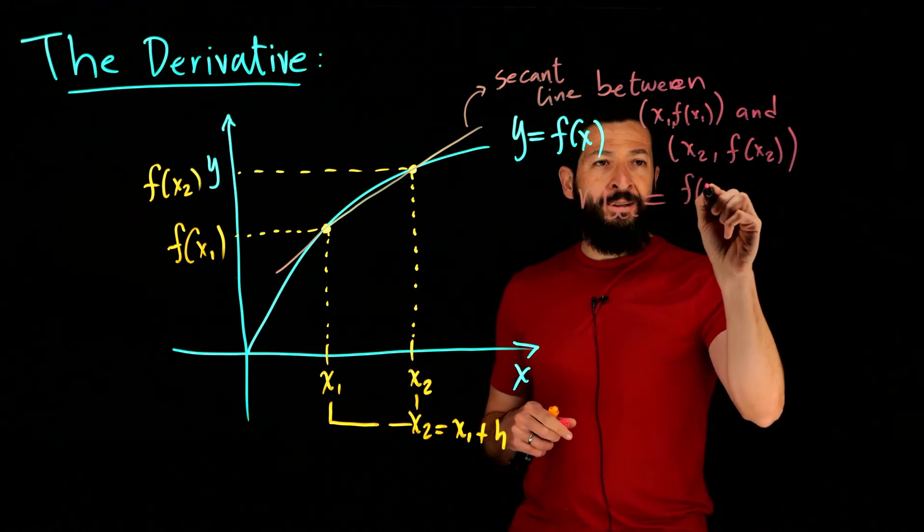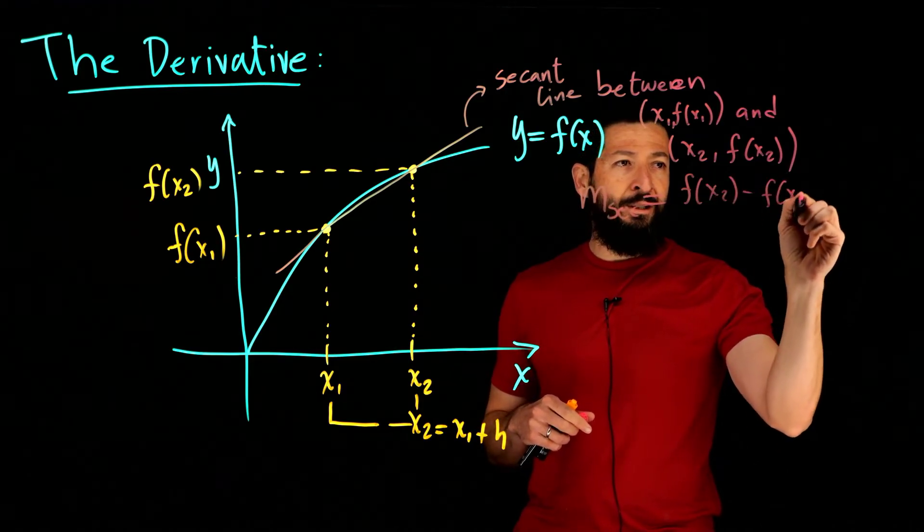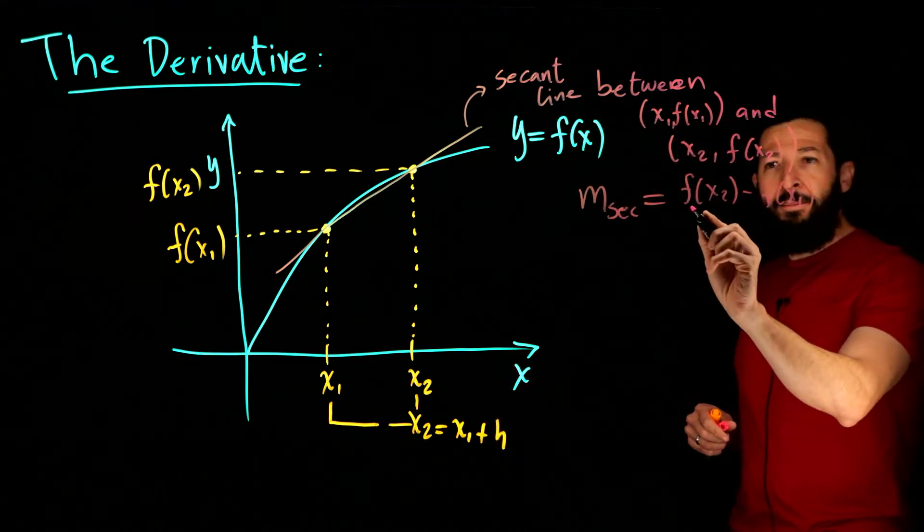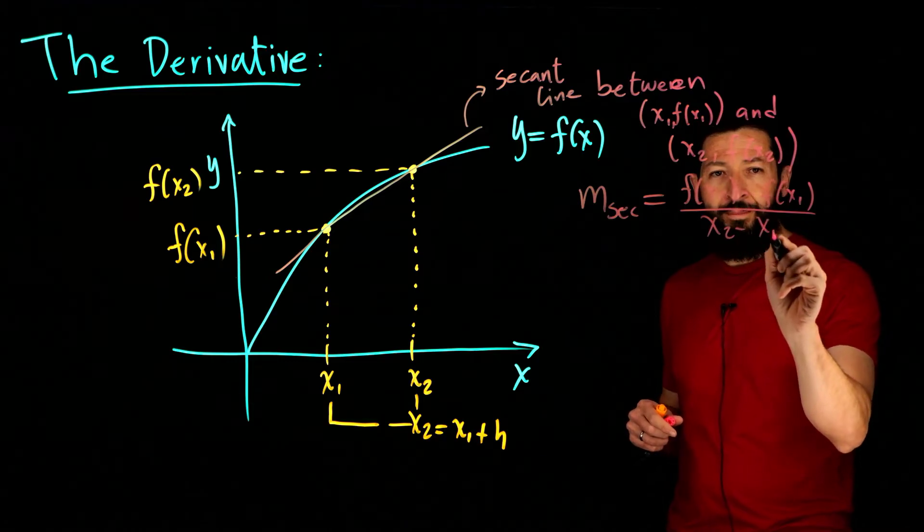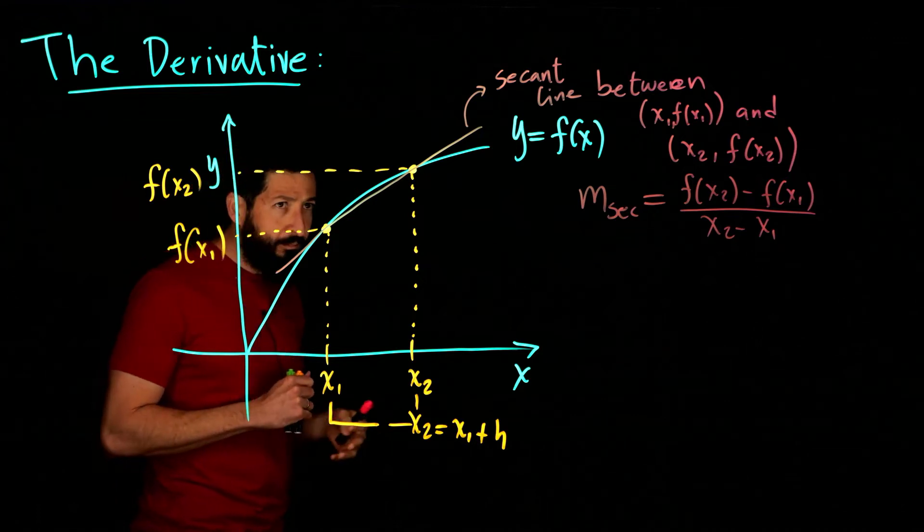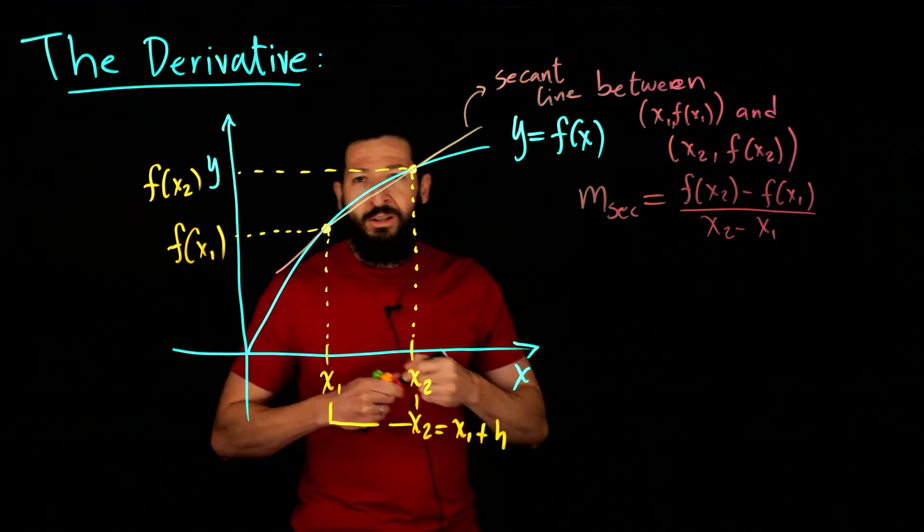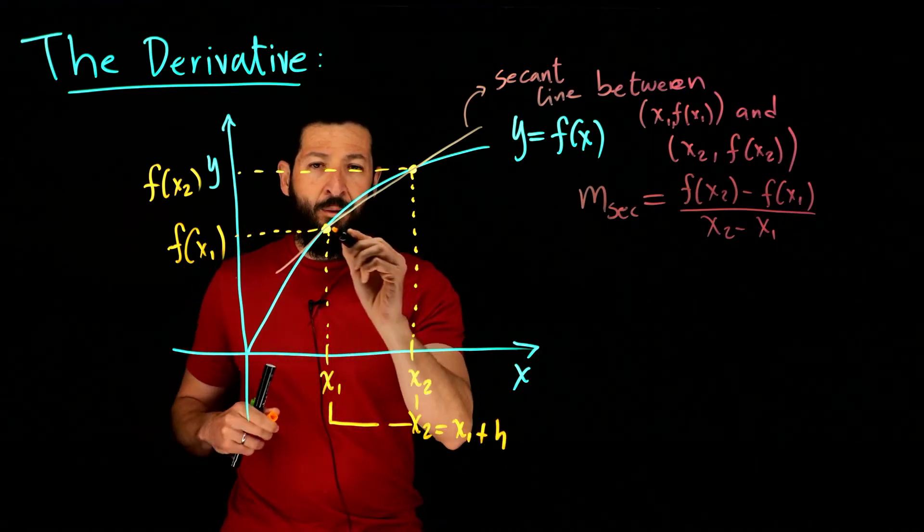That's going to be f of x2 minus f of x1, so I'm subtracting the y coordinates and I'm dividing by x2 minus x1. So that is the slope of the secant line right there. It tells me how much is the function changing in the y coordinate